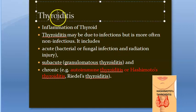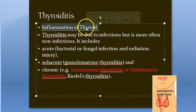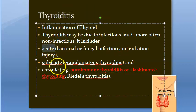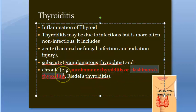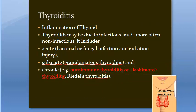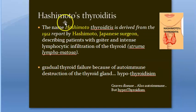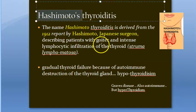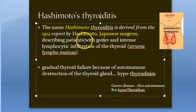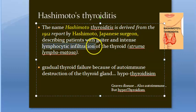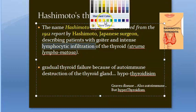Thyroiditis is the inflammation of the thyroid. It can be acute because of infection, or chronic due to Hashimoto's thyroiditis or autoimmune thyroiditis. The name Hashimoto comes from the Japanese surgeon Hashimoto who described patients with goiter and intense lymphocytic infiltration of the thyroid. This is what you should always remember — Hashimoto's means lymphocytic infiltration will be there.